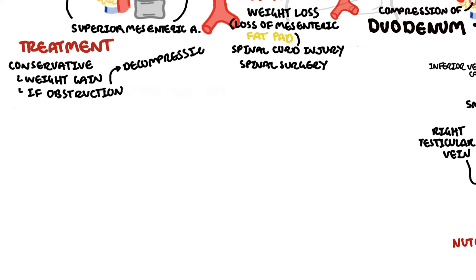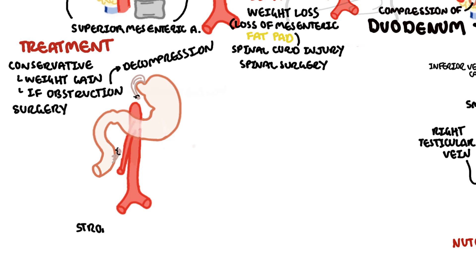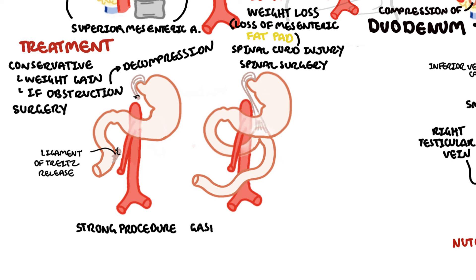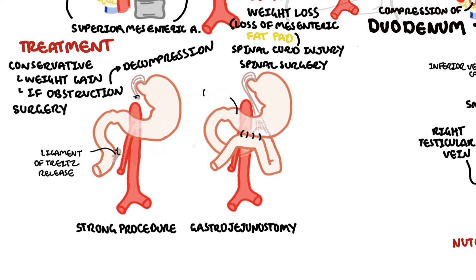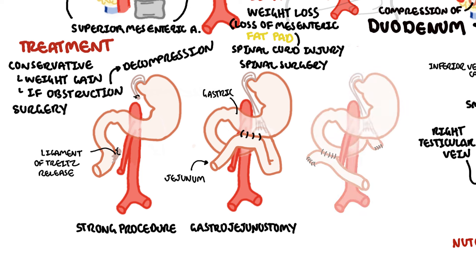In terms of surgery, if the condition is not improving with conservative management, there are three major surgical options. These are the Strong procedure, where mobilization of the ligament of Treitz allows displacement of the duodenum; gastrojejunostomy, where the stomach is connected to the jejunum, the second part of the small intestine; or duodenojejunostomy, where the more proximal duodenum is connected to the jejunum.